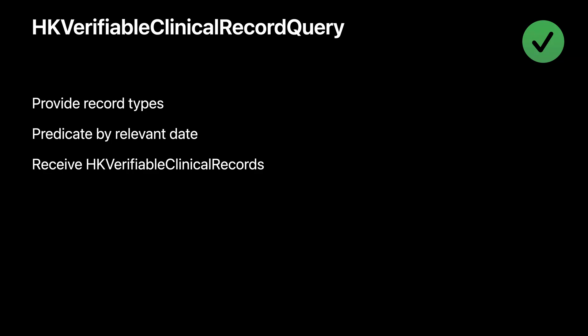Once the query is executed and the user taps Share, the authorized HKVerifiableClinicalRecords are returned in the results handler. The record includes basic information about the subject and issuer, and of course the JWS property, which will contain the raw data that you will verify and decode. Now I'm going to hand it off to Kerry, who will walk you through how to import test data, use the API to request records, and verify a record's JWS.